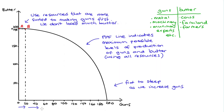As we increase the production of guns, we move along the PPF to the right. But the resources in our economy that are really excellent at making guns get used up, so we have to start using resources that are not so good at making guns. And perhaps these resources are not too bad at making butter. So when we use these resources up, the rate at which we lose butter increases — because it's harder for them to make guns, so we need more of them, and it's easier to lose butter because they're not so bad at making butter.